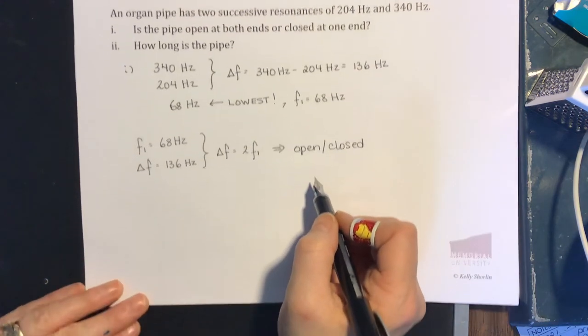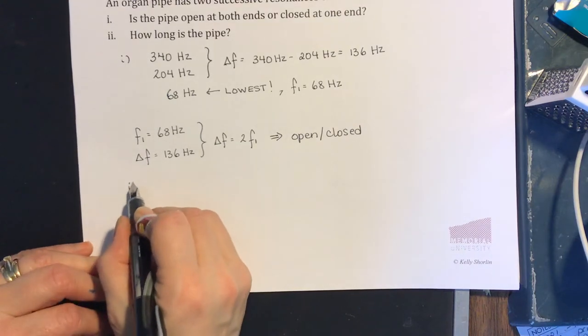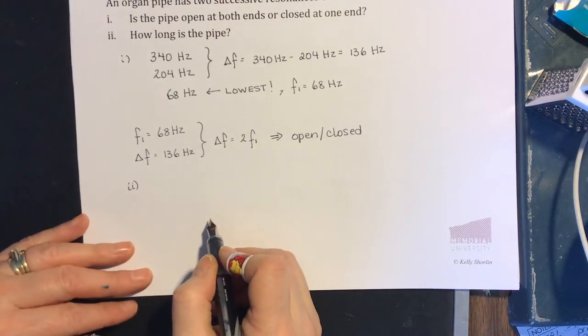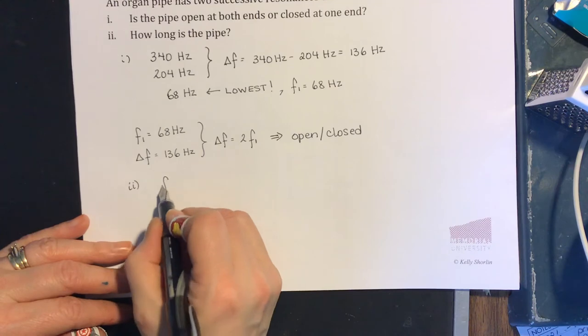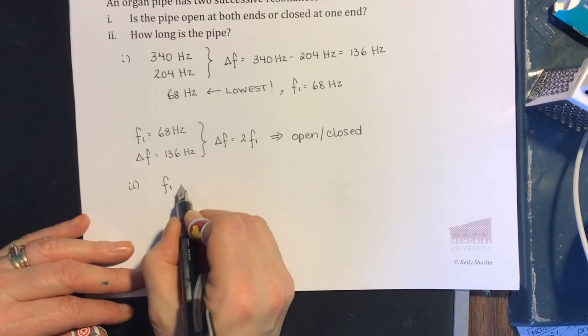The next part, how long is the pipe? We can use any of our resonances to tell us that. Let's use the fundamental. We know that our fundamental frequency, F1, is... looks like my pen dried out on me.